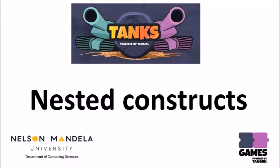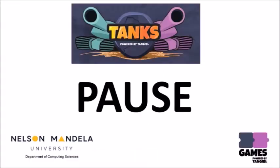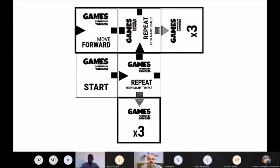Now I want to take you one step deeper — we're going into the really difficult stuff. This is called the nested construct. Before I explain it, can anyone look at this, apply everything I've told you, and tell me how many times will the tank move forward, assuming there's nothing in its way? Nine times! How do you get to nine times?